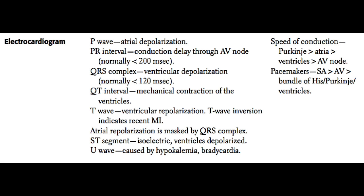We'll discuss some of the components of the electrocardiogram. The P wave represents atrial depolarization. Generally, the right atrium depolarizes first and then the left atrium, although they generally just make one long P wave. The PR interval is representative of the conduction delay through the AV node as the signal travels from the atrium to the ventricles. The PR interval is very important to allow for ventricular filling time.